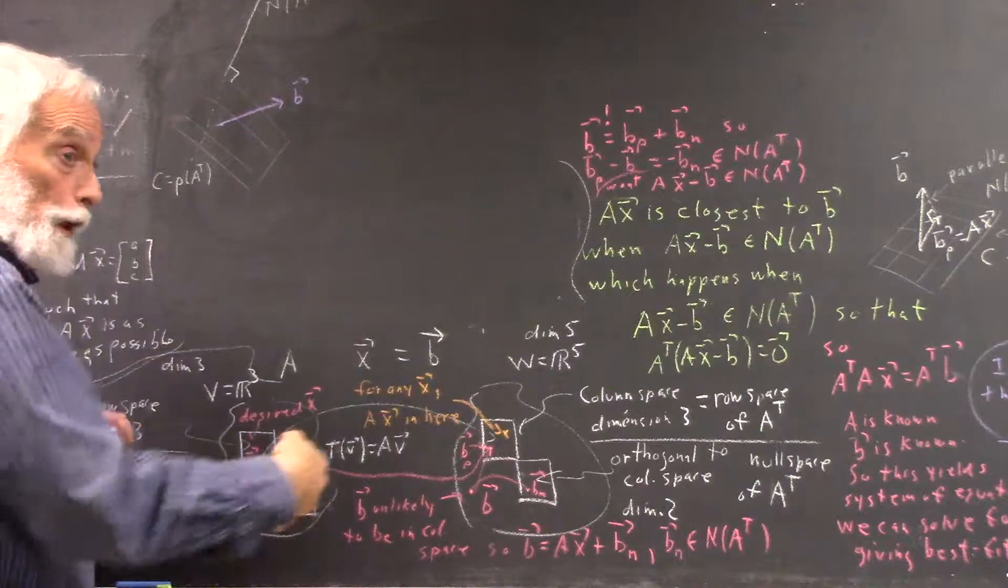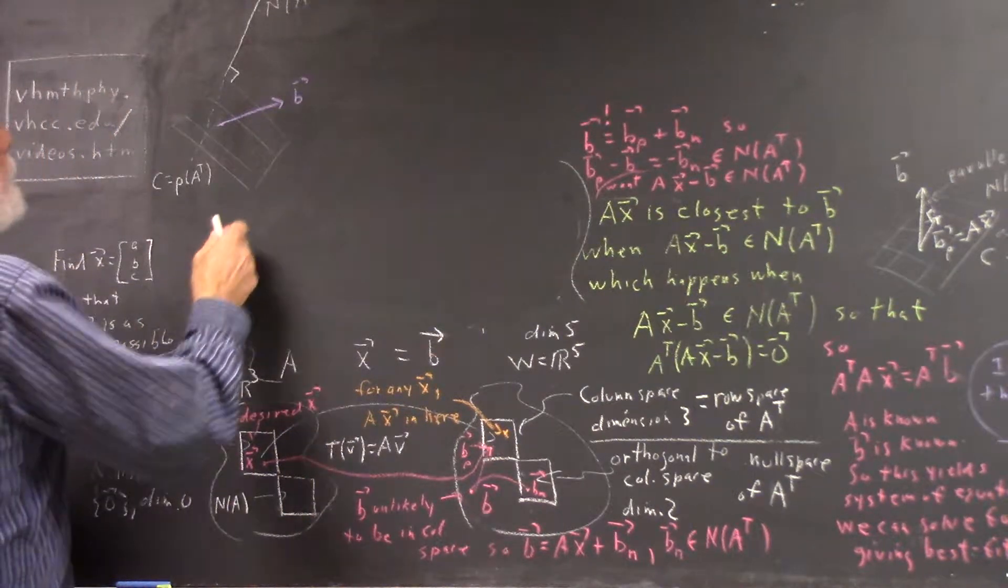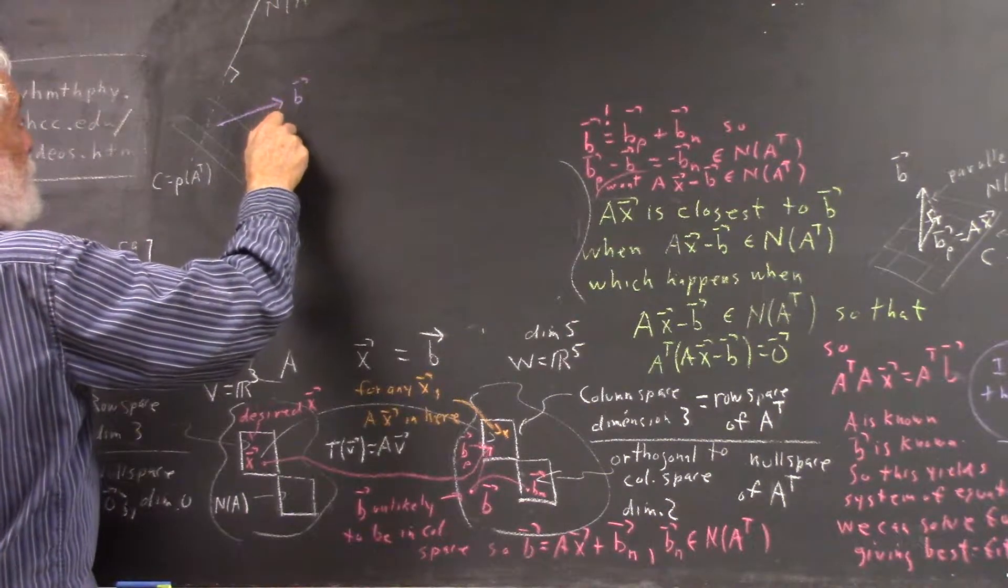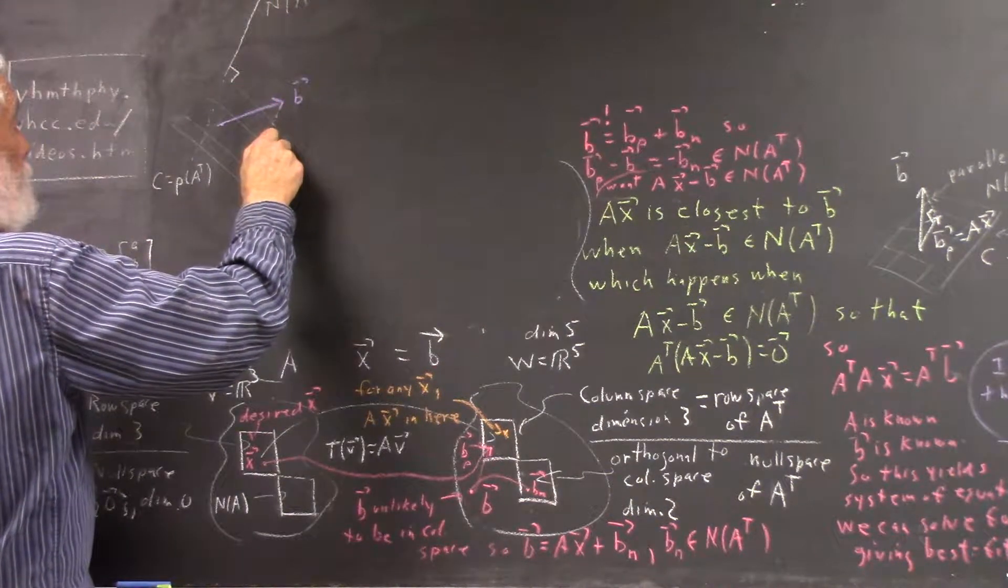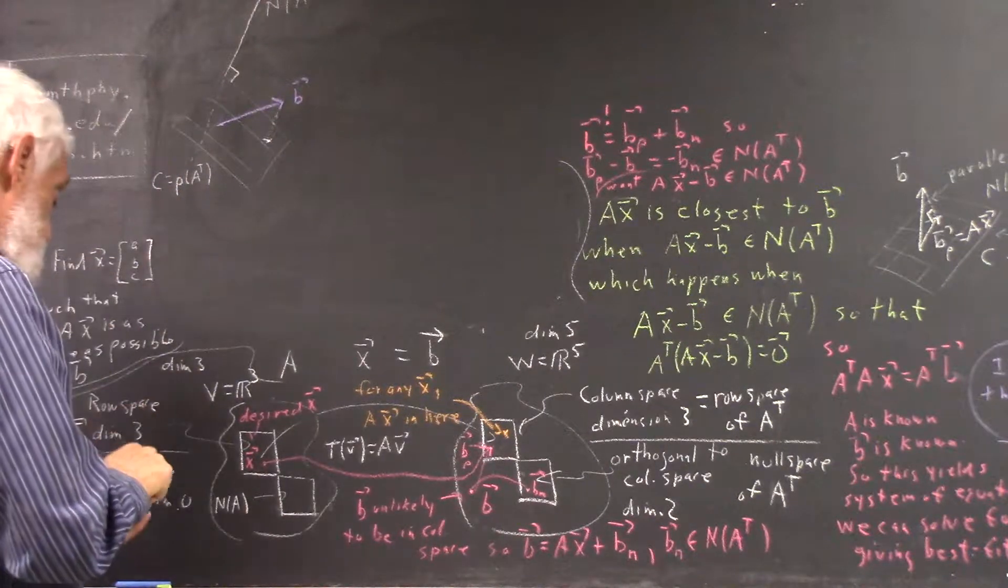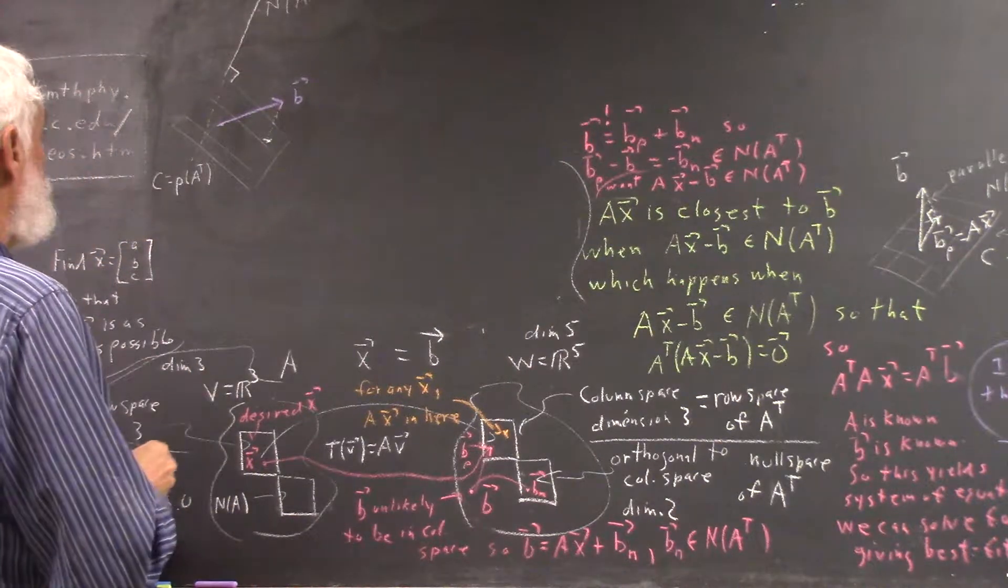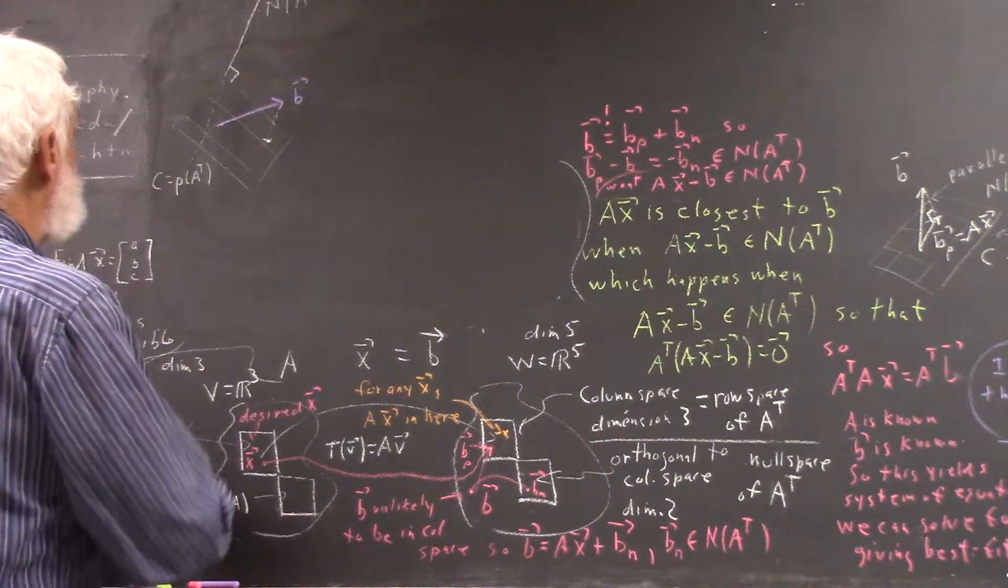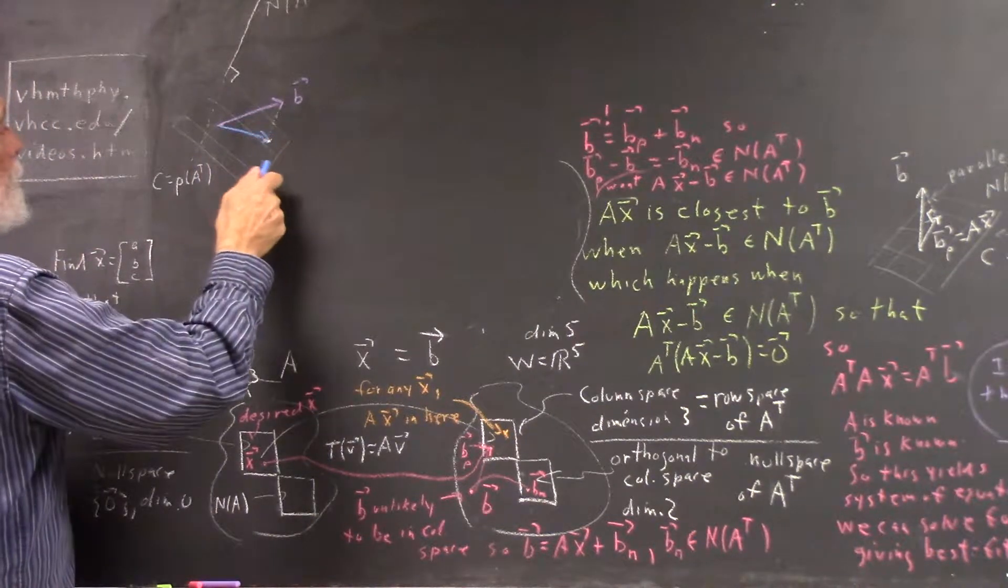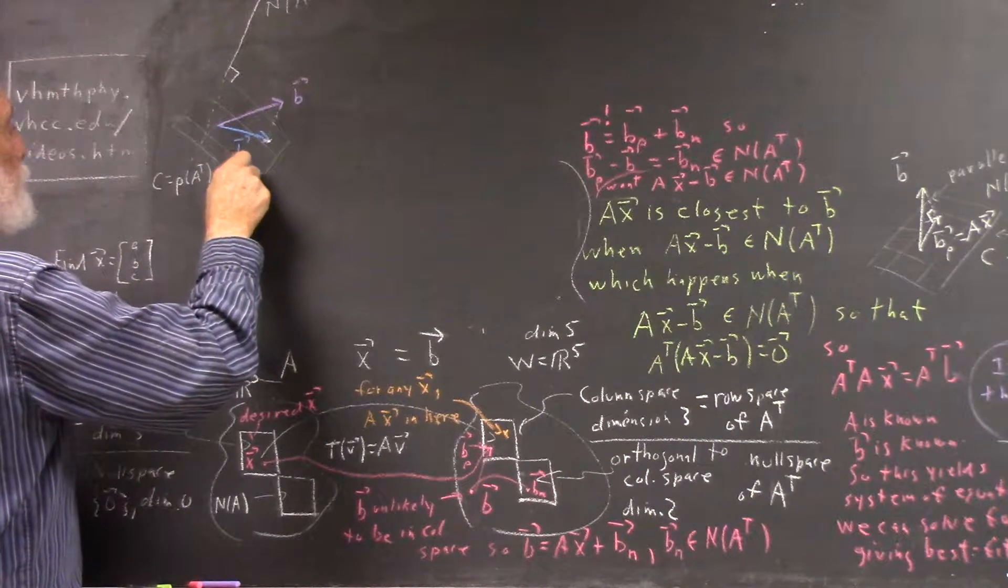We project B parallel to the null space until we hit the column space or the row space of A transpose. And the vector that we get there is the vector that we call B sub rho.